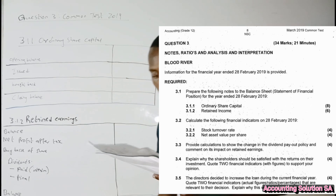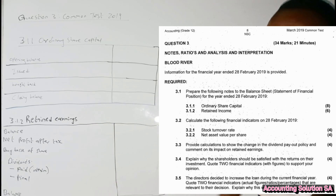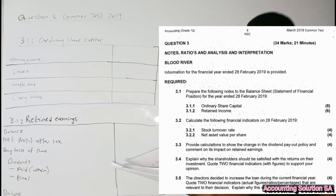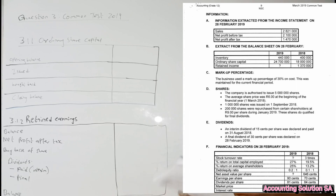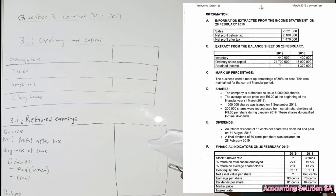Number two, we're going to prepare the retained income note. This is the format that you are going to use. Now let's go to our information. The first information we have is from the income statement of 28 February 2019, and we have an extract from the balance sheet on 28 February. We have inventory, ordinary share capital, and retained income balance.